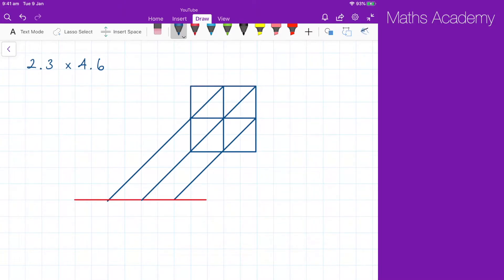Now the way we use this is we write the 2, then the decimal point, then the 3, making sure that the decimal point goes above this vertical line here. We then write the 4.6, and again making sure the decimal is in line with that horizontal.